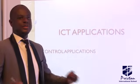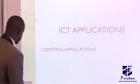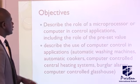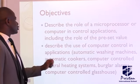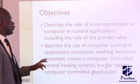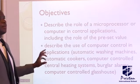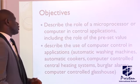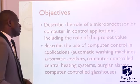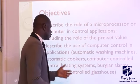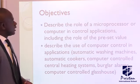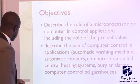That means they are not just passively measuring, but they are also actively doing something based on the measurement that comes in. In today's class we will be describing the role of a microprocessor or computer in controlling applications, and we will also look at a very important part of a process called the preset value. We will also describe the use of computer control in applications such as automatic washing machines, automatic cookers, computer-controlled central heating systems, and burglar alarms.